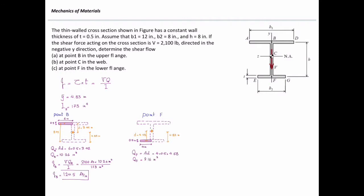I can now determine the shear flow at point F. V and I are the same as before; only Q changes. Performing the calculation with V = 2,100 pounds, Q = 9.16 in³, and I = 173 in⁴ gives a shear flow at point F equal to 111.2 pounds per inch.